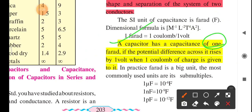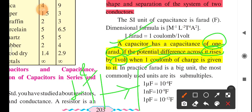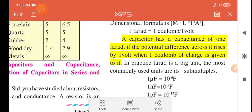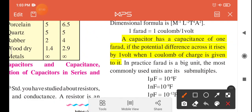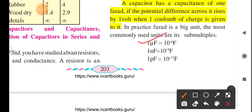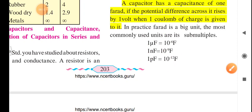A capacitor has the capacitance of 1 farad if the potential difference across it rises by 1 volt when 1 coulomb of charge is given to it. In practice, farad is a big unit. So we have smaller units: 1 microfarad is 10 to the power minus 6 farad, 1 nanofarad is 10 to the power minus 9 farad, 1 picofarad is 10 to the power minus 12 farad.